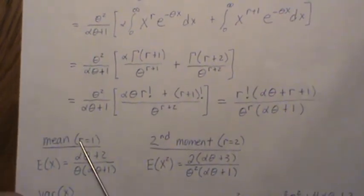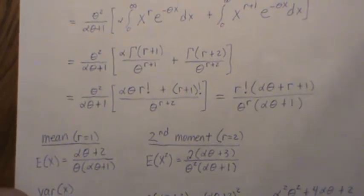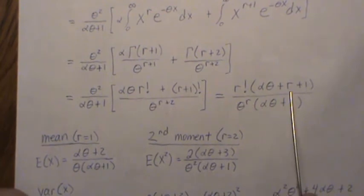We're going to use that to find the mean. So when r is equal to 1, the expected value of x, we get this. The second moment, we let r equal 2 and we get this right here.